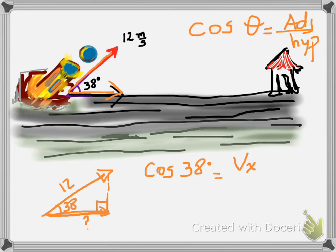On the bottom we're going to have the hypotenuse, which in this case is 12 meters per second. Well, we are looking, of course, for this Vx.